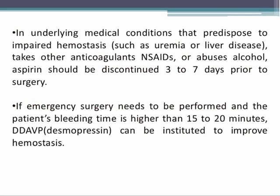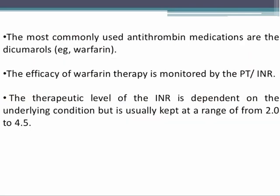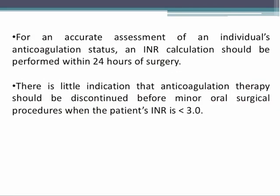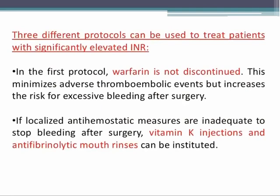If emergency surgery is needed and the patient's bleeding time is higher than 15 to 20 minutes, desmopressin can be instituted to improve hemostasis. The most commonly used antithrombin medication is warfarin (dicoumarols). The efficacy of warfarin therapy is monitored by prothrombin time (PT) and international normalized ratio (INR). The therapeutic level of INR is dependent on the underlying condition but should be in the range of 2 to 4.5. An INR calculation should be performed within 24 hours of surgery. There is little indication to discontinue anticoagulation therapy before minor oral surgical procedures when INR is less than 3. In Protocol 1, warfarin is not discontinued — this minimizes thromboembolic events but increases bleeding risk.